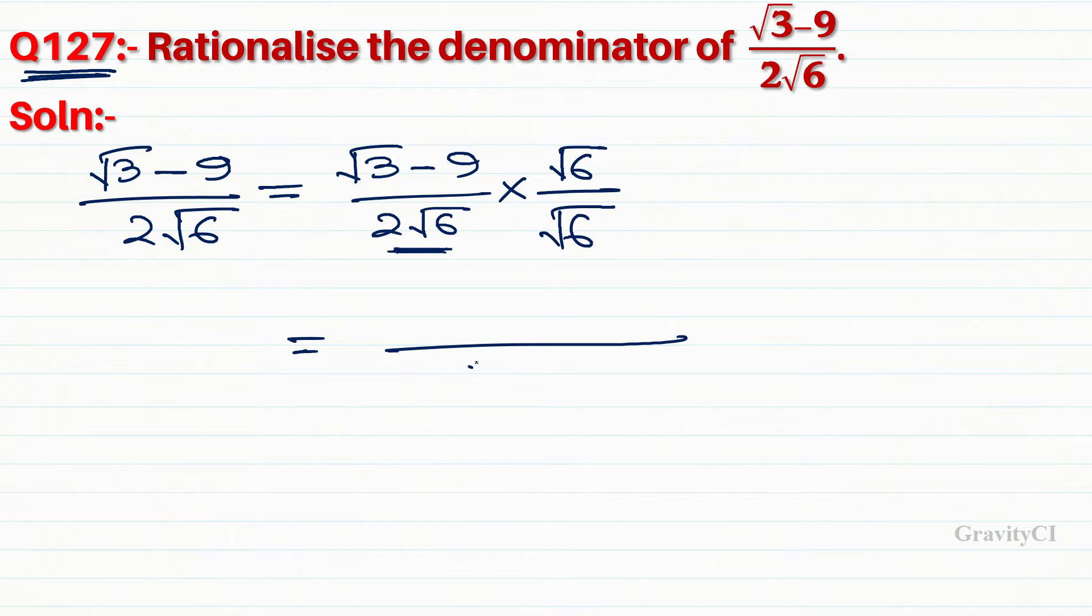We get 2 times √6 times √6, which gives 12 in the denominator. In the numerator, we multiply √6 by √3.